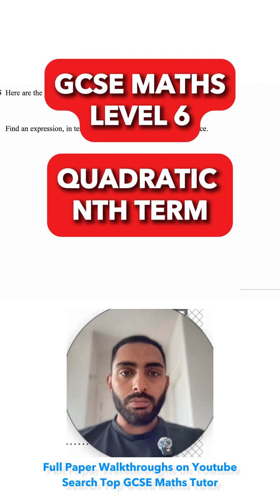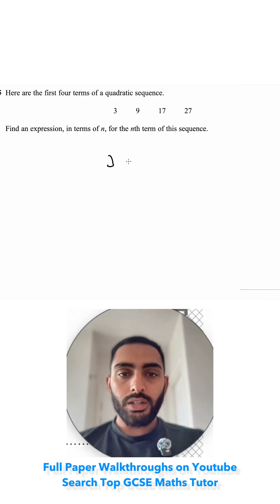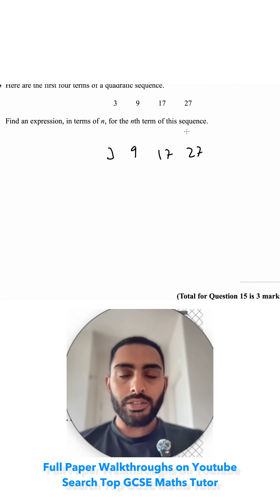Question 15. Here are the first four terms of a quadratic sequence: 3, 9, 17 and 27. Find an expression in terms of n for the nth term of the sequence.